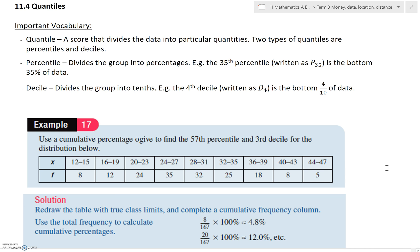So a percentile is like it sounds, it has percentages in it. So basically it divides the group into percentages. So for example, the 35th percentile, and we write that as P35, is the bottom 35% of the data. So you can see it's working from the bottom up, the start up.